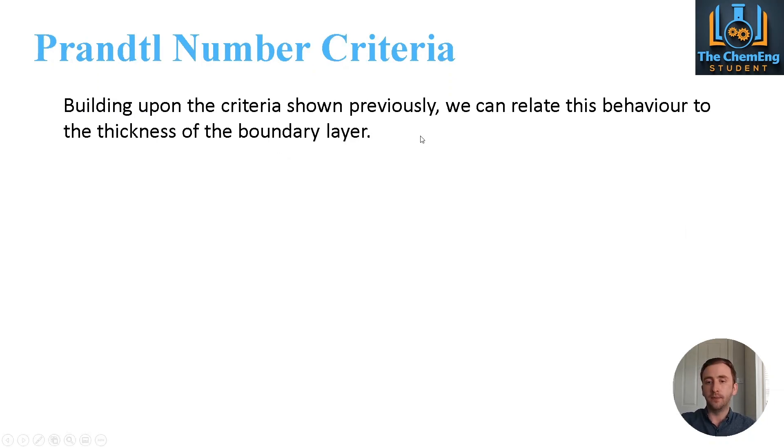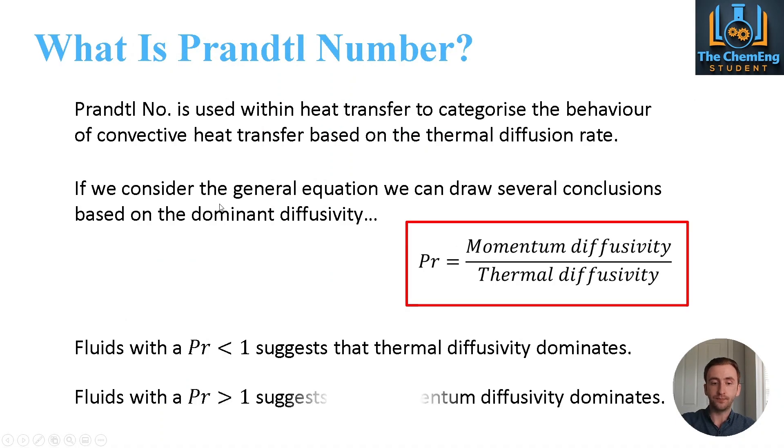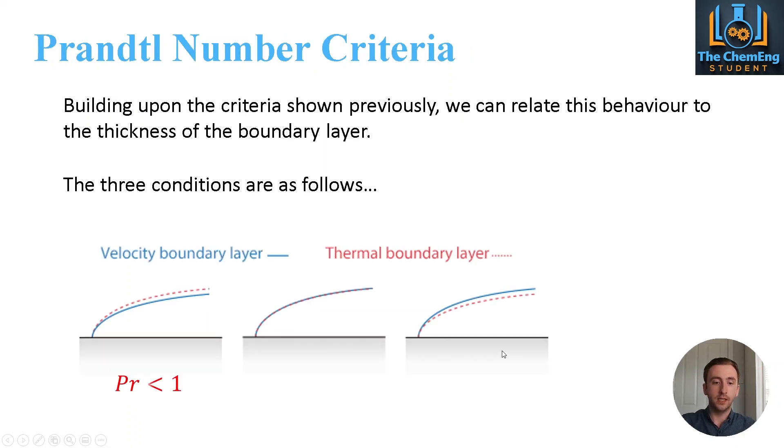Building on this criteria, we can also relate the behaviour to the thickness of a boundary layer. The three conditions are: if we consider a velocity boundary layer and also a thermal boundary layer which is governed here in red for the thermal and blue for the velocity, then if Prandtl is less than 1, that tells us that we have thermal diffusivity which dominates. So here what that tells us, and you can clearly see this on the graph, is that the thermal boundary layer is greater than that of the velocity.